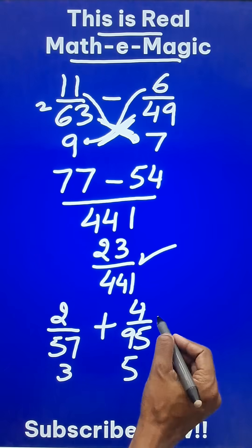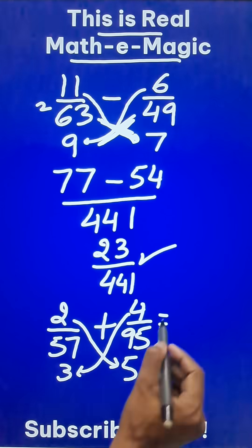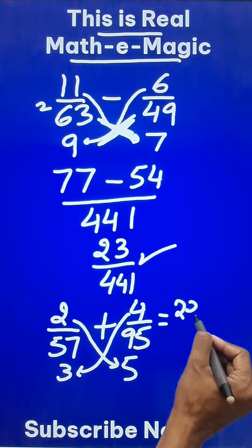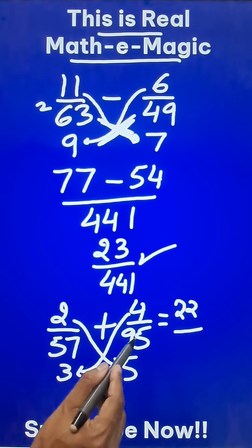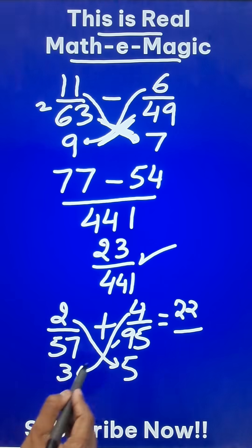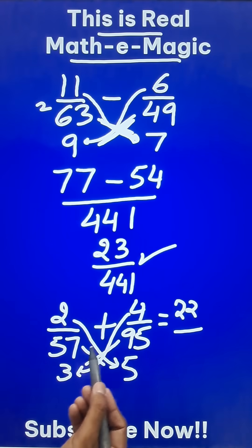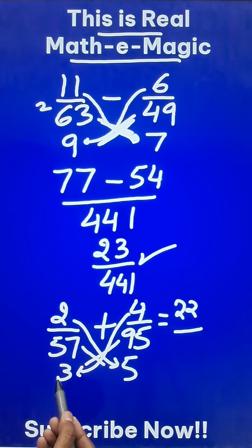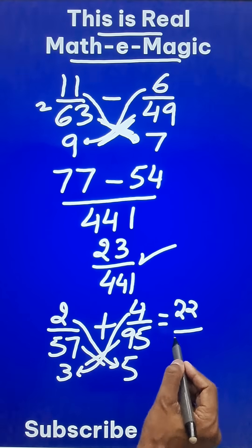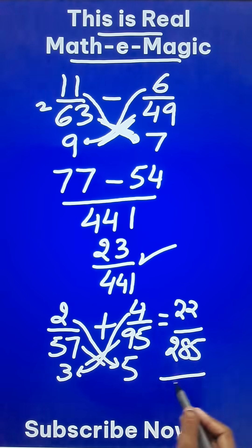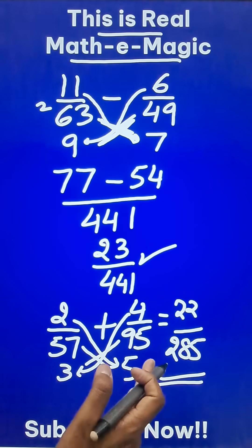In the numerator, you will get 10 plus 12, which is 22. In the denominator, you can use either 95 times 3 or 57 times 5. Doing 95 times 3 is easy: 270 plus 15 equals 285. And there we go — the answer for the question is 22 upon 285.